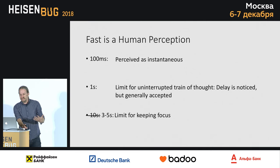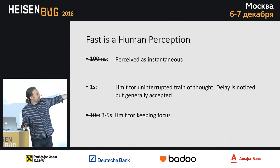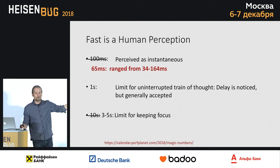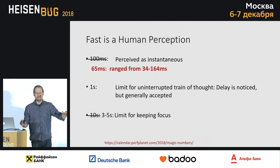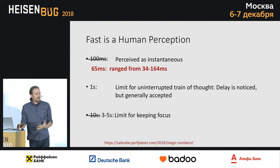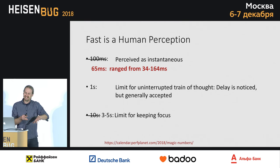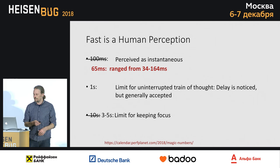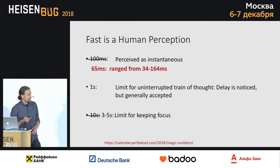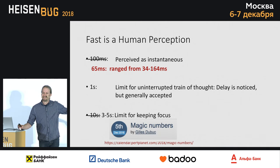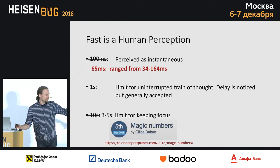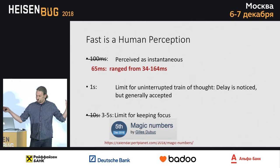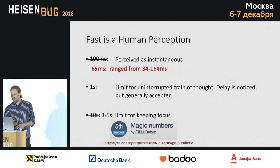Interestingly, the 100 milliseconds figure isn't accurate either — it's actually 65 milliseconds, and it was a range. That makes sense, right? Different people perceive this differently. If you play a lot of video games, you expect it to be a lot faster; if you don't play as many, it's slower. This study was really interesting, and what's remarkable is that it was published last night — so this is a rapidly changing field.